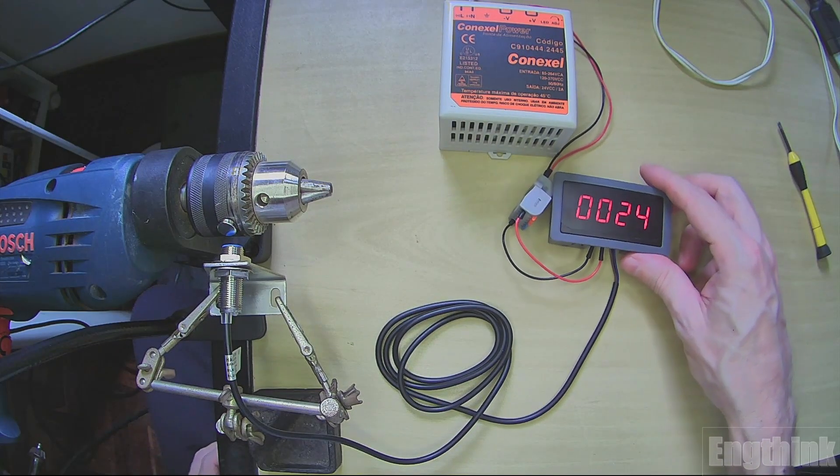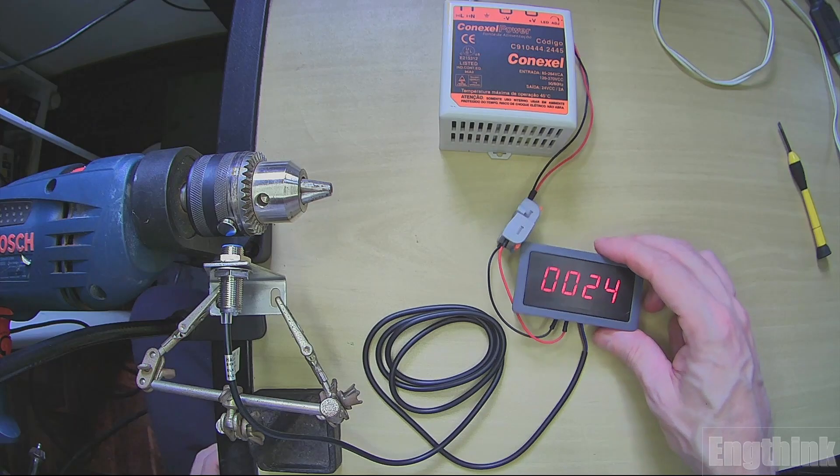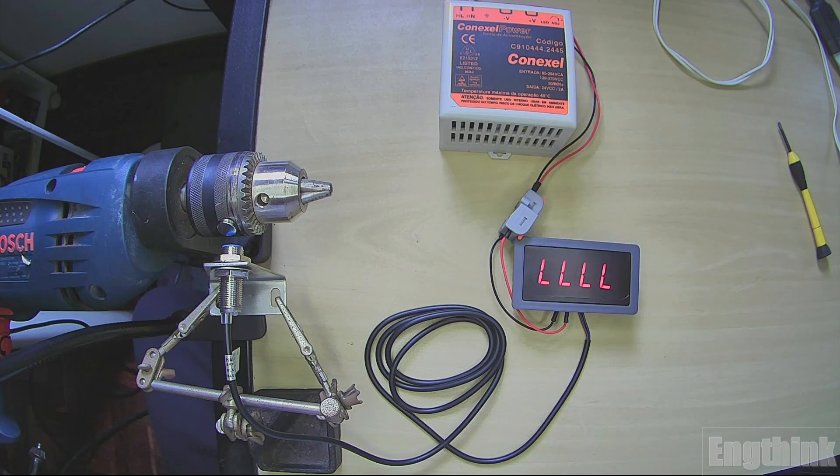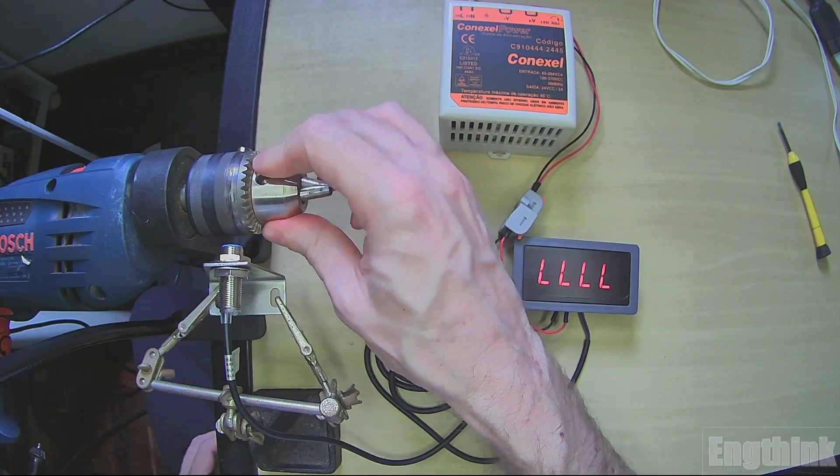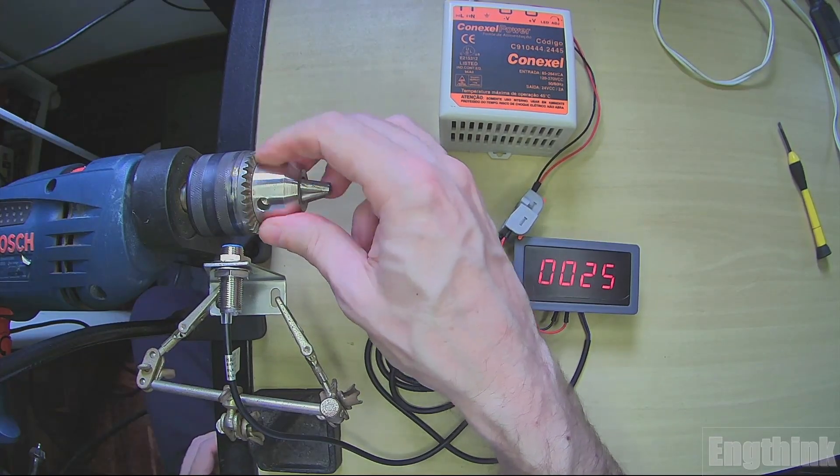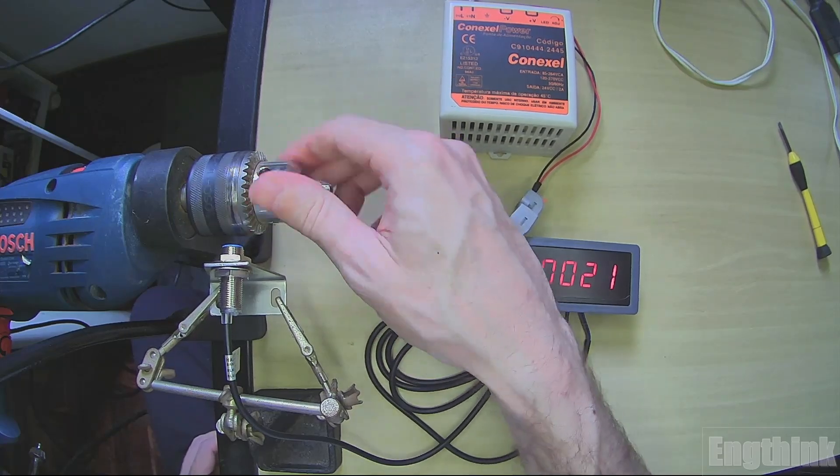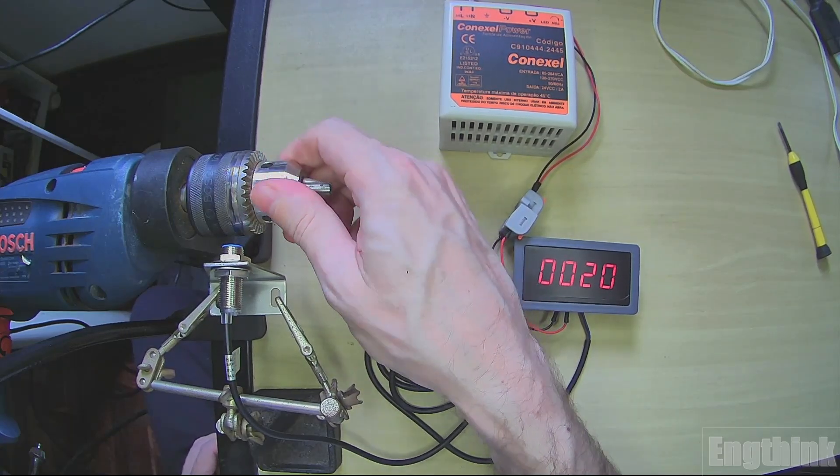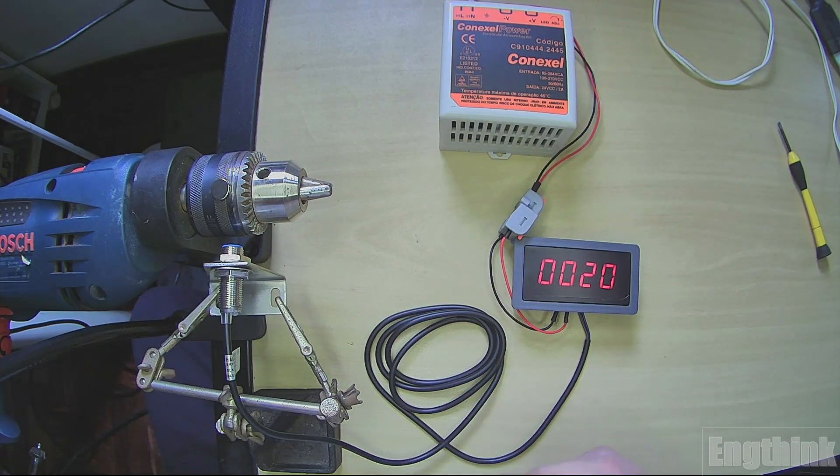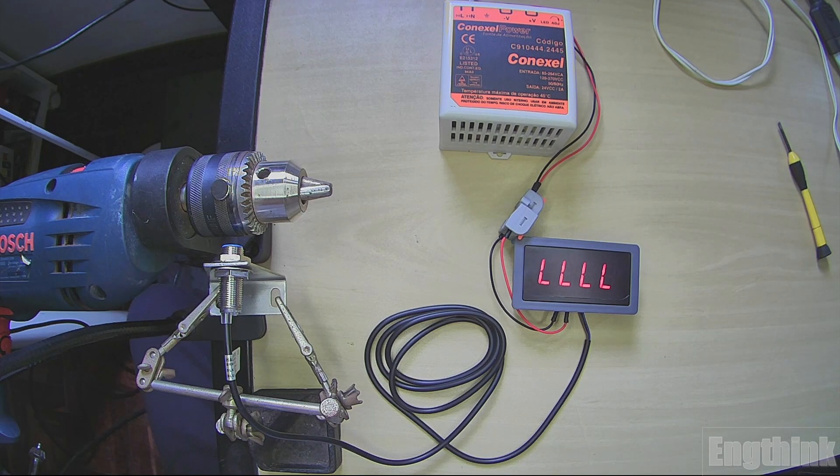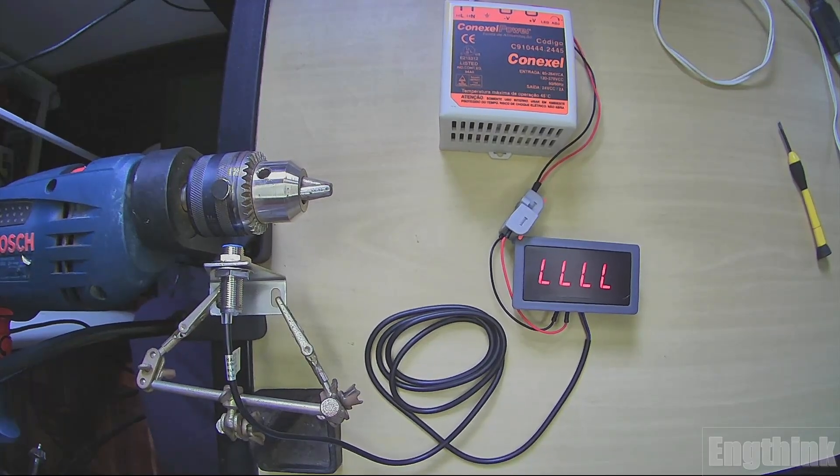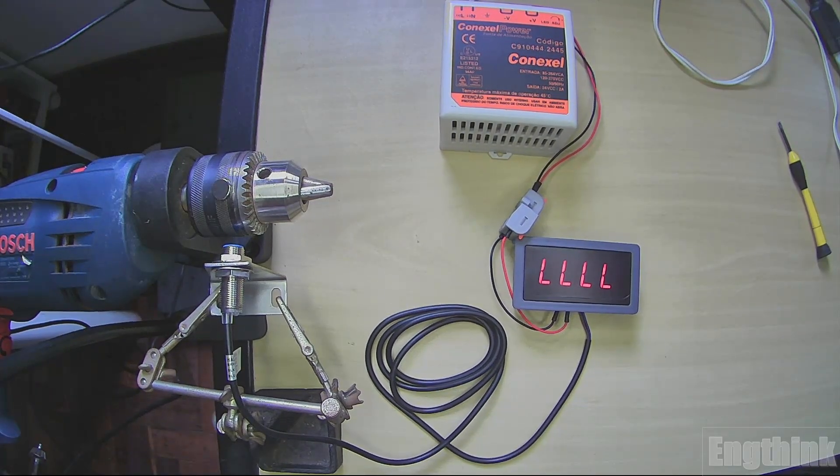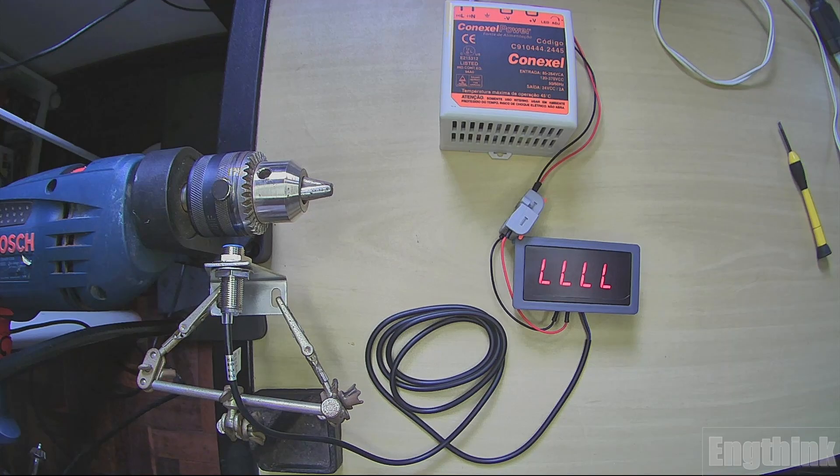Then we can see the indication of the RPM right here. If I move with my hand I can see that we have some indication. And now let's power on the drilling machine. Now we have some big noise right now. So I will move the microphone to not have this interference when I talk. Let's start the drilling machine.